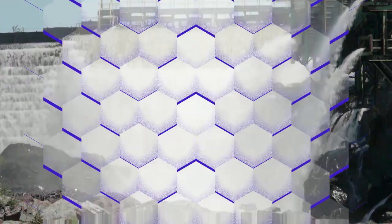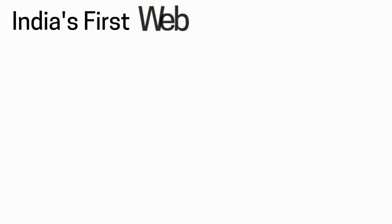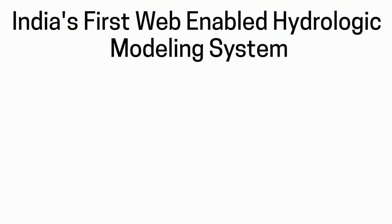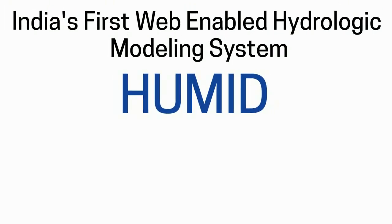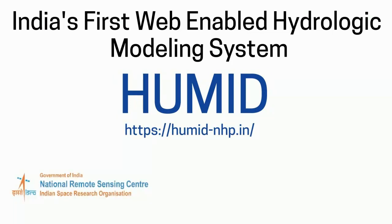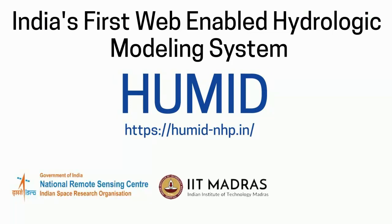Let's make a beginning with India's first web-enabled hydrologic modeling system — HUMID, developed jointly by NRSE ISRO and IIT Madras under the National Hydrology Project.